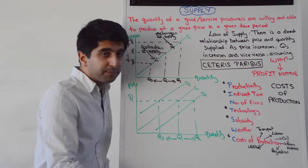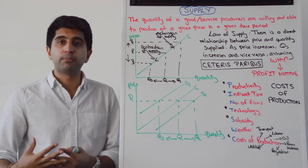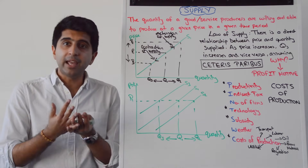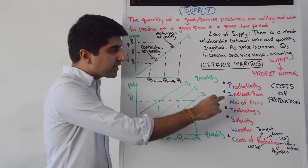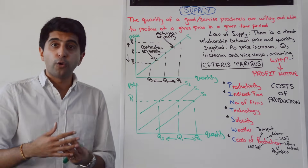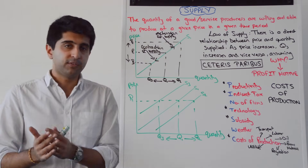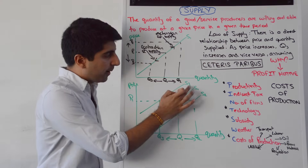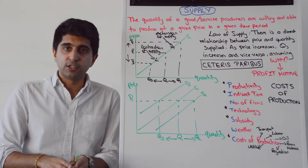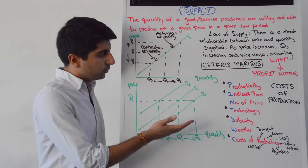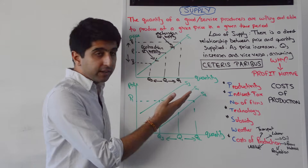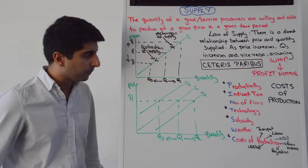I is indirect tax — a tax on production that firms have to pay. This will increase costs of production. If an indirect tax has been implemented or increased, the supply curve will shift to the left from S1 to S3. Whereas if indirect taxes have been reduced or taken away, costs of production decrease and the supply curve shifts to the right from S1 to S2.